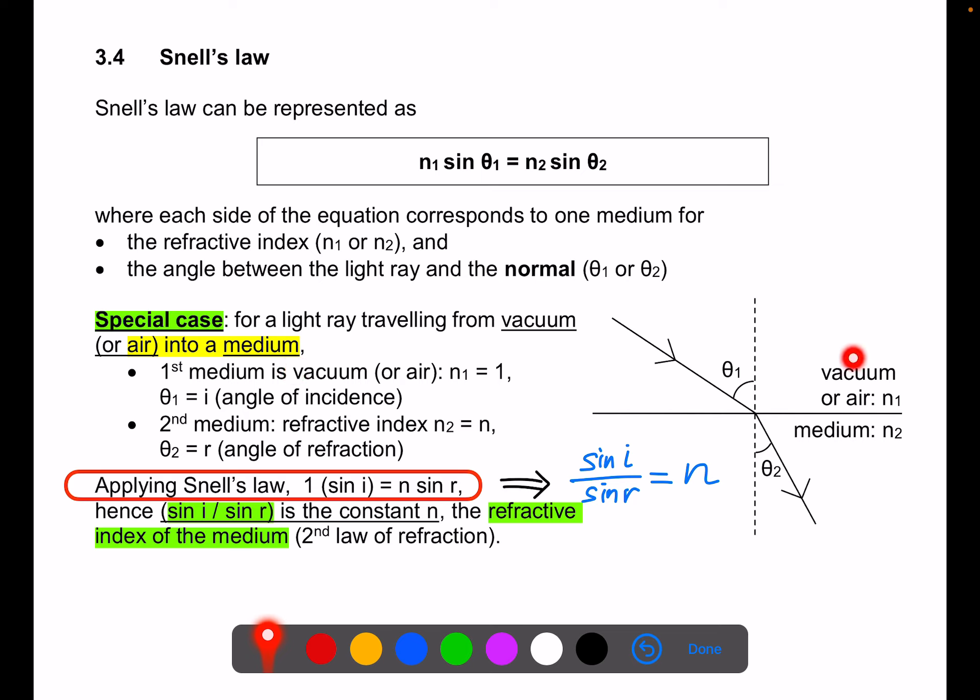So vacuum or air, the refractive index n1 will be 1 and angle is theta 1. Second medium n2, we'll just call it n.